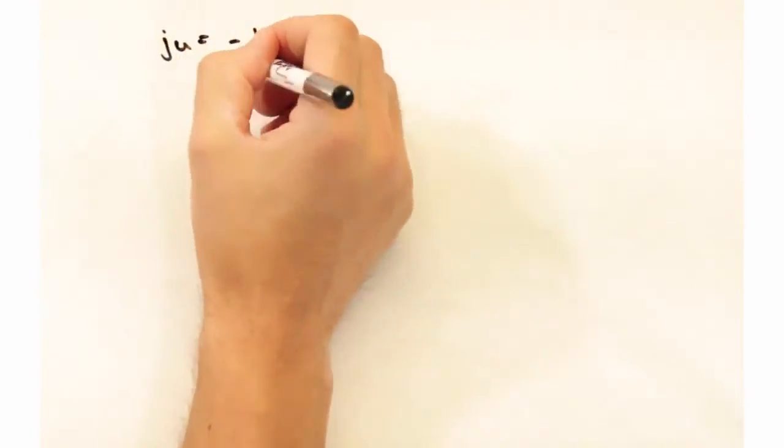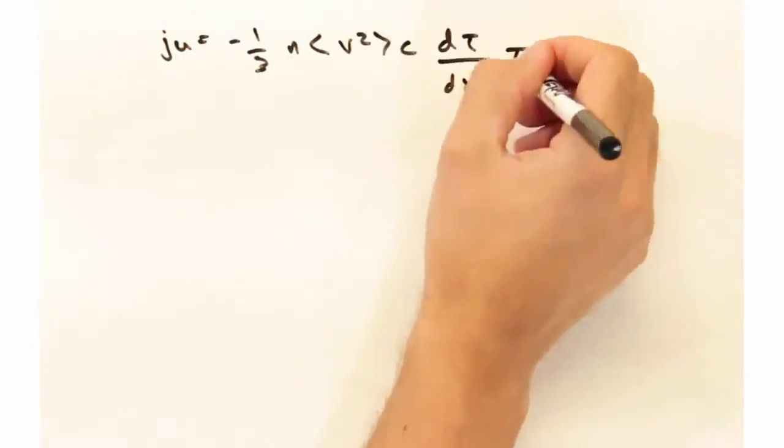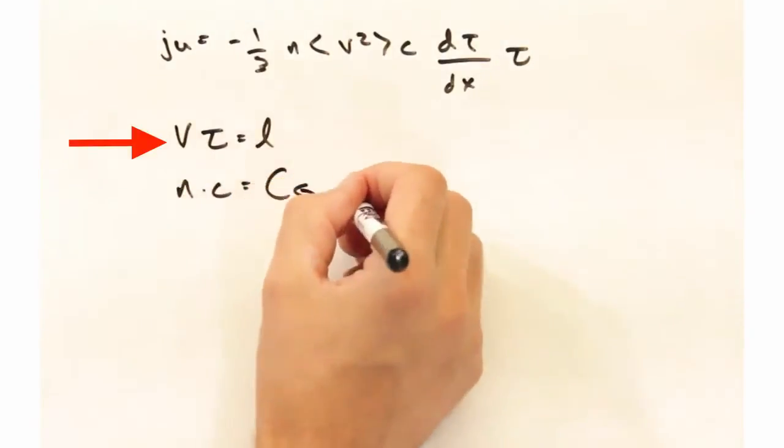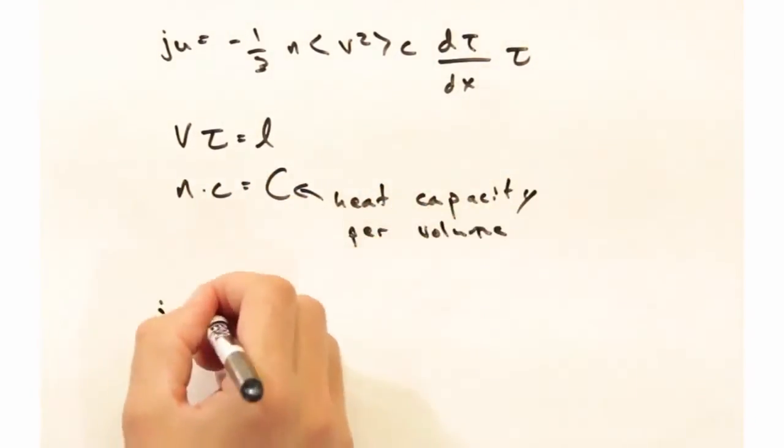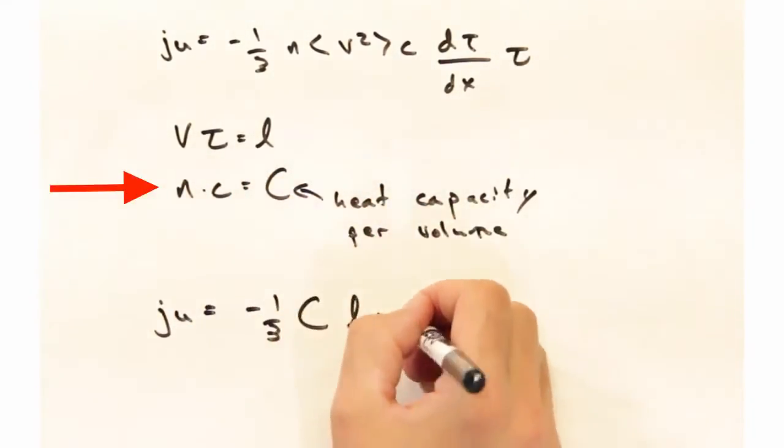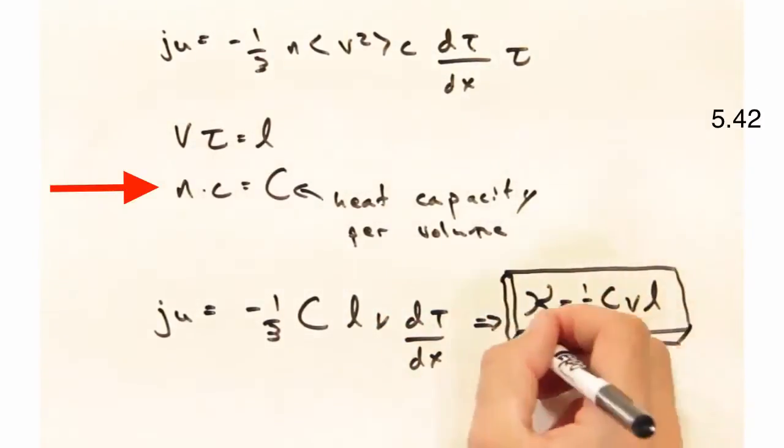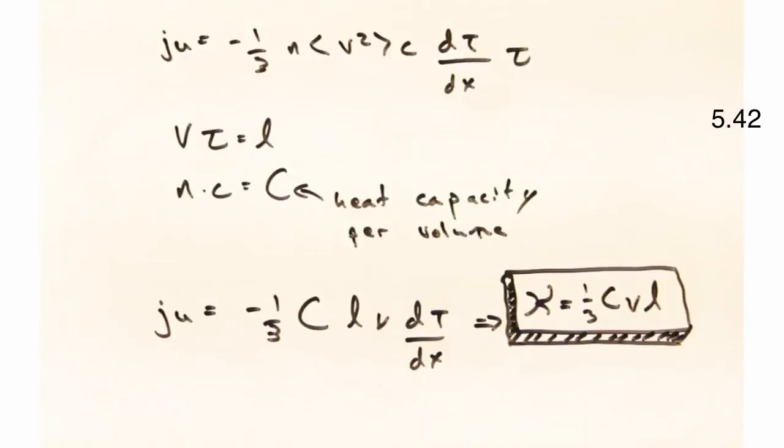Moving along, we can substitute that into our energy flux expression, and we can also take that tau and one of our velocity terms, recast that as l, and we can take our particle density and our heat capacity per particle, and then write that as heat capacity per volume. Okay, we're about done with this business.